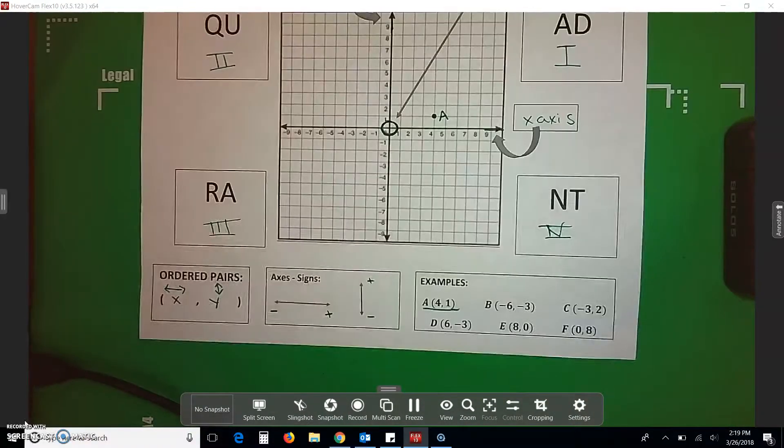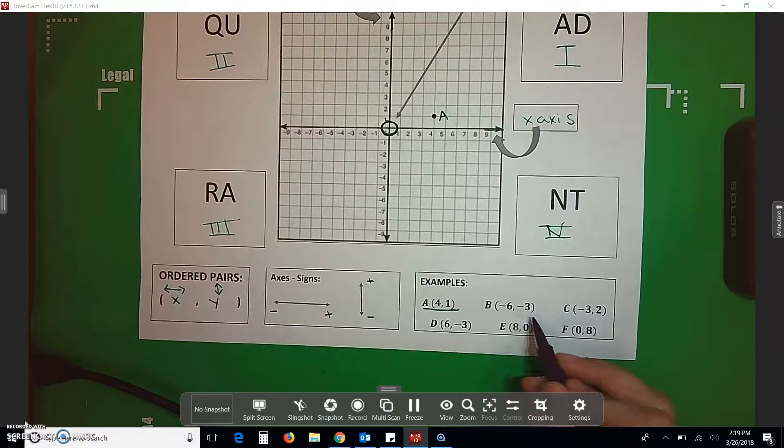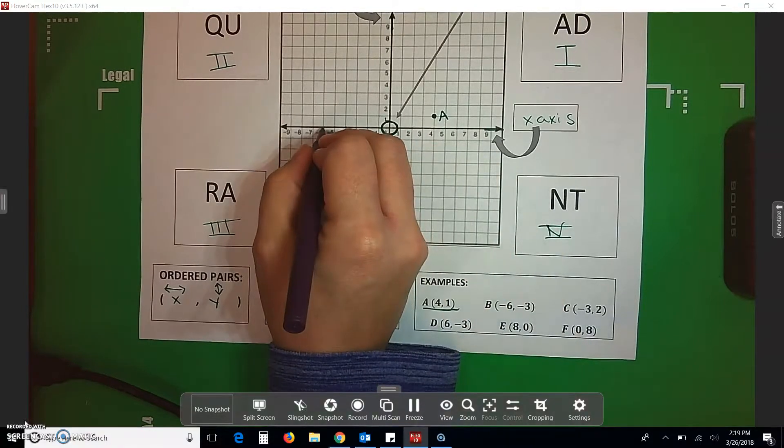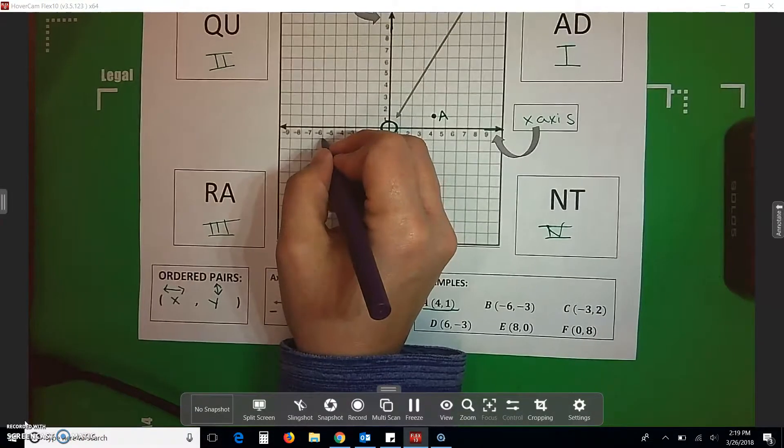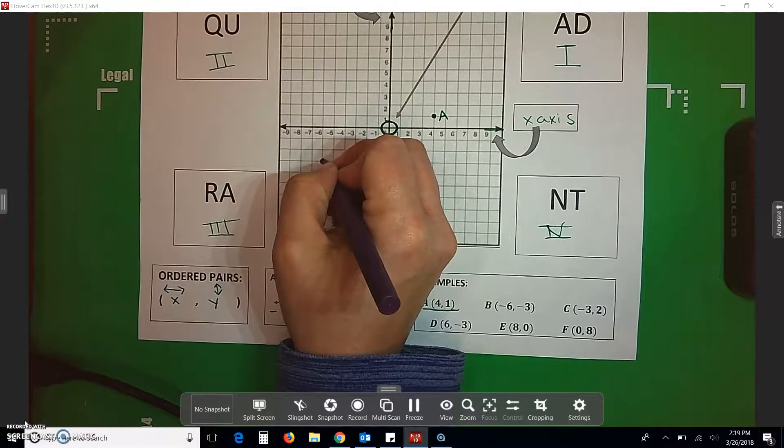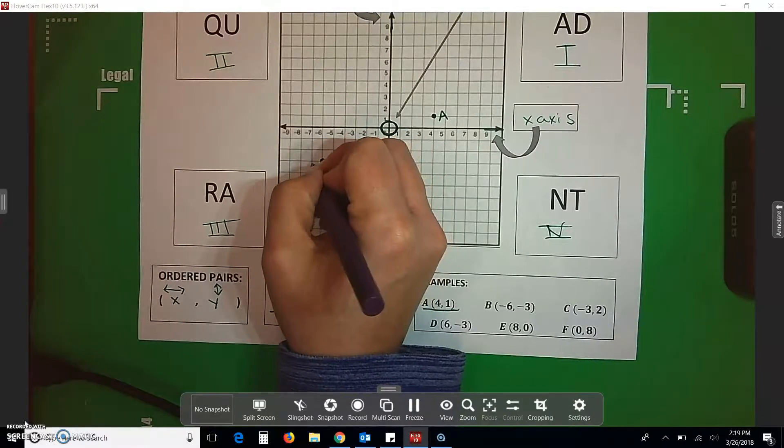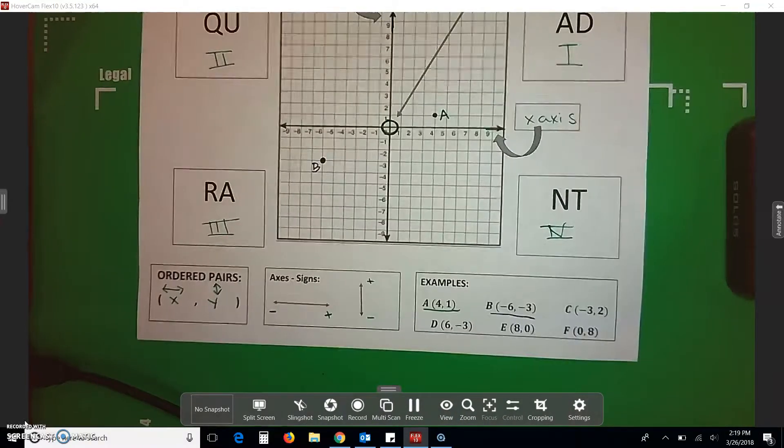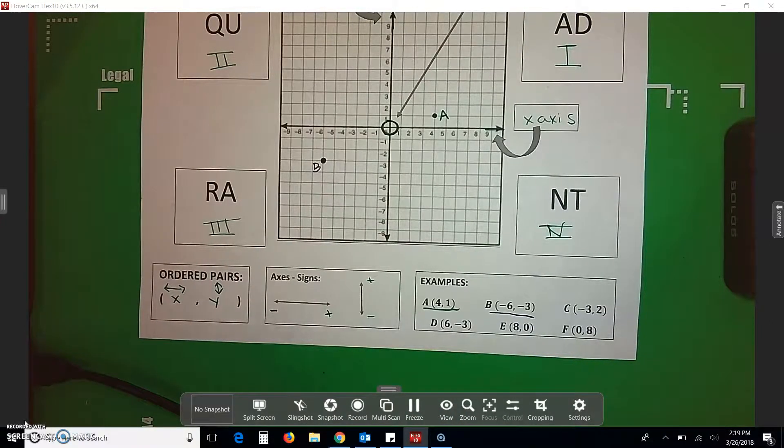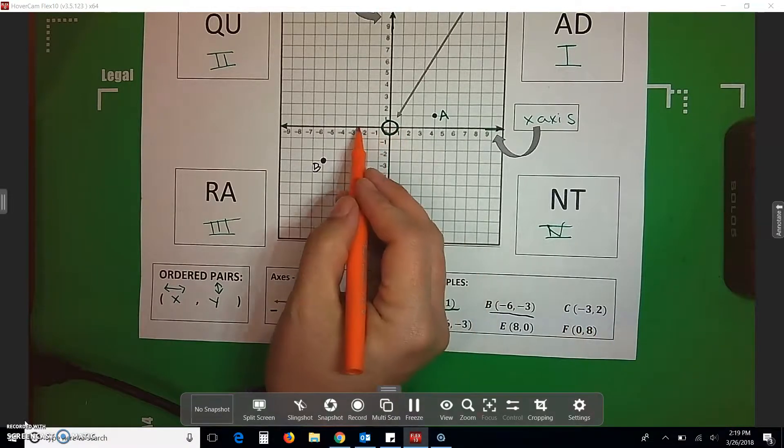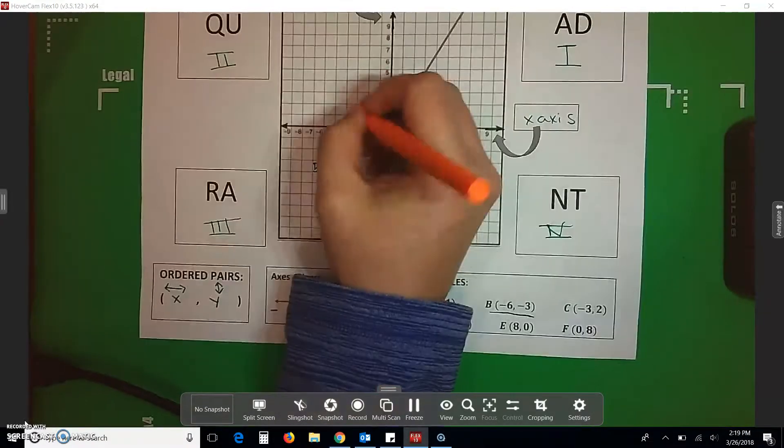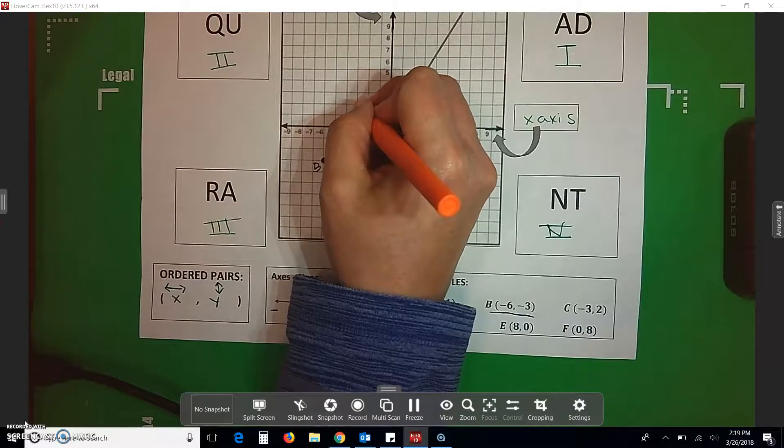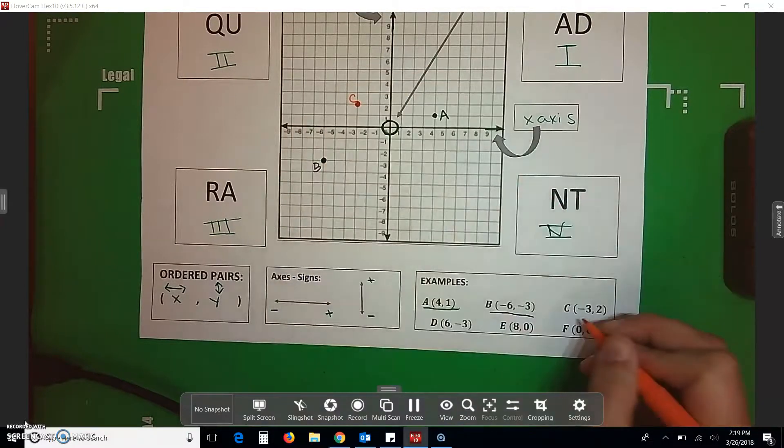Then, we're going to go to point B, which is negative 6. So, it's to the left. Negative 3 is down. 1, 2, 3. That's our point B. We go over to C. It's negative 3. So, that's to the left. Positive 2 is up. That's our C.